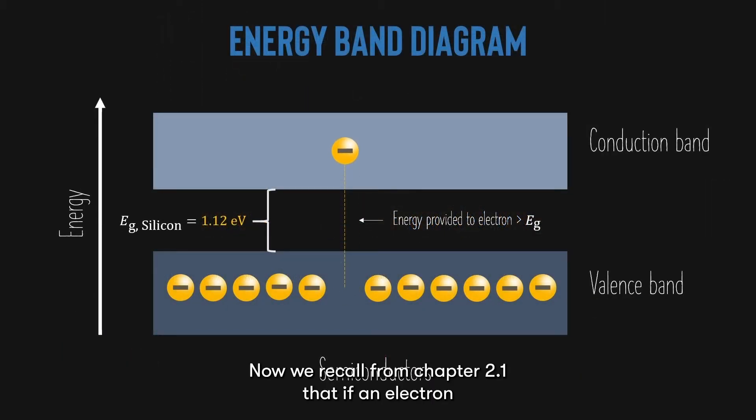Now, we recall from chapter 2.1 that if an electron in a semiconductor absorbs more energy than its energy band gap, it will be excited from the valence band to the conduction band. For silicon, the energy band gap is 1.12 electron volts, which means if the electron absorbs more than 1.12 electron volts of energy, it will be excited.